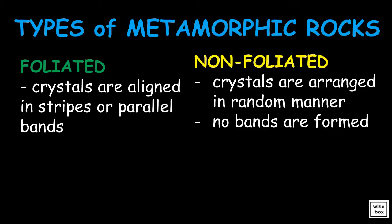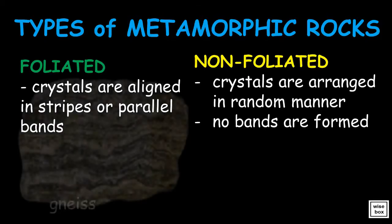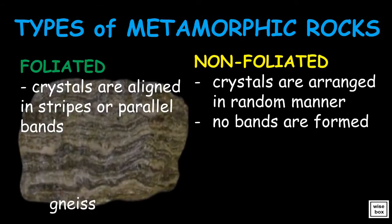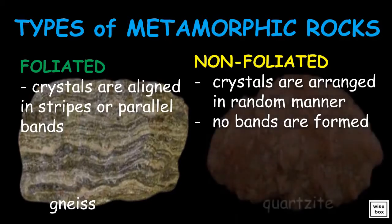An example of a foliated metamorphic rock is gneiss — notice the presence of parallel bands. For non-foliated metamorphic rock, an example is quartzite.